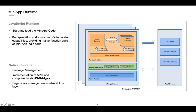The MiniApp URI scheme distinguishes which MiniApp to launch, and the MiniApp runtime is responsible for loading the code and running the user interfaces. The MiniApp runtime framework contains two layers: the JS logic layer and the native runtime layer. The JS runtime layer is the top layer of the developer-based library, and MiniApp code interacts with this layer directly.